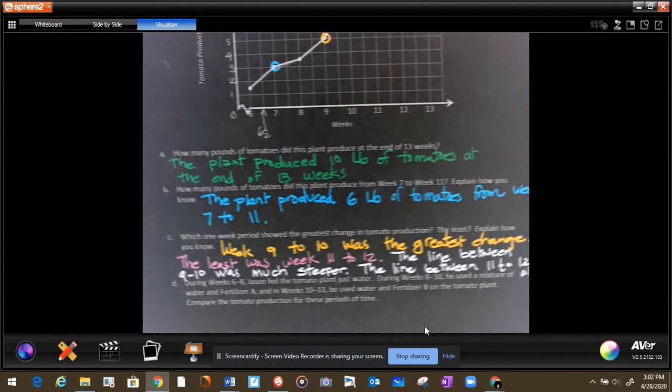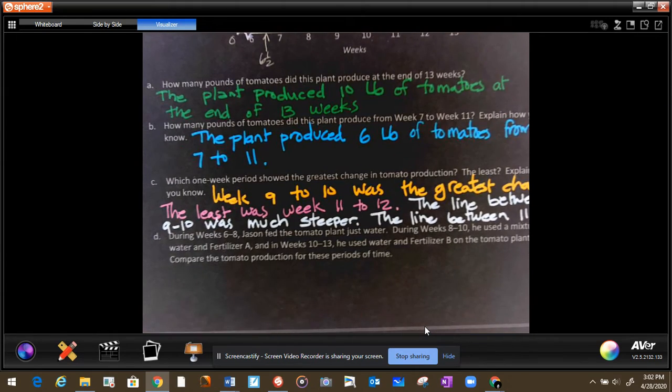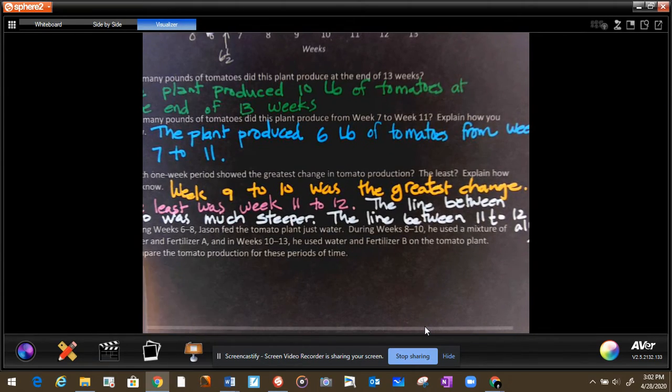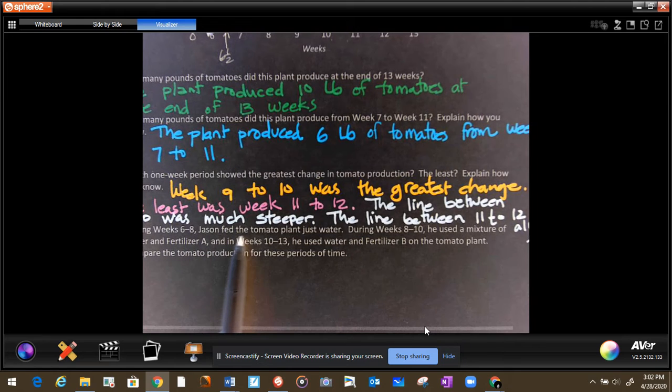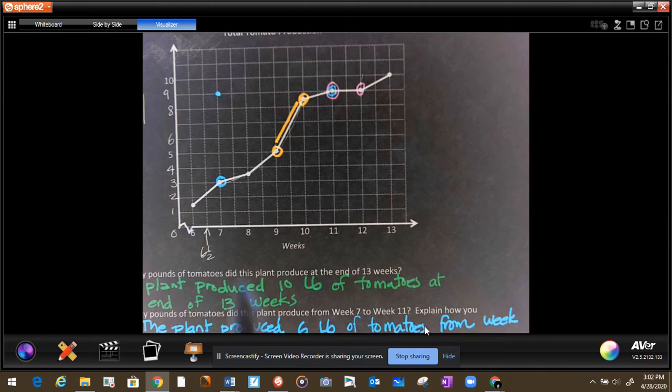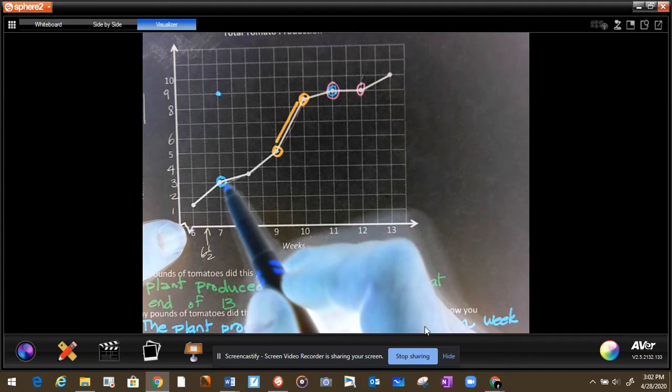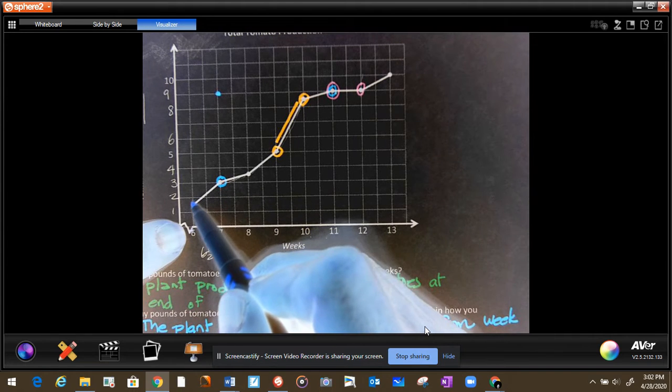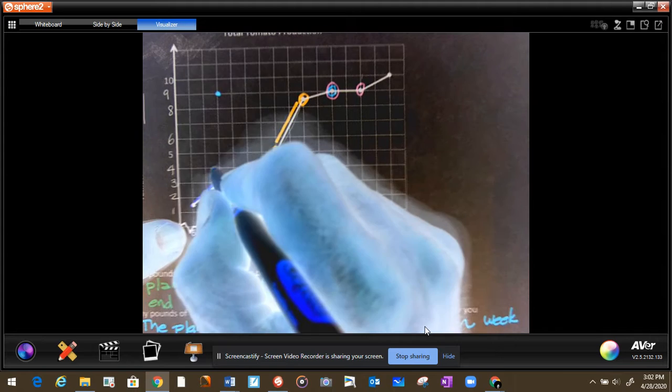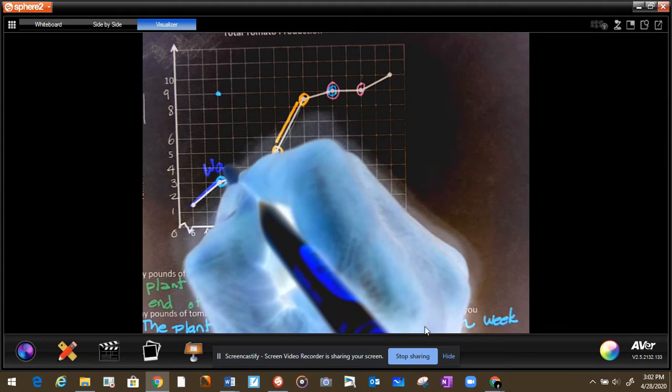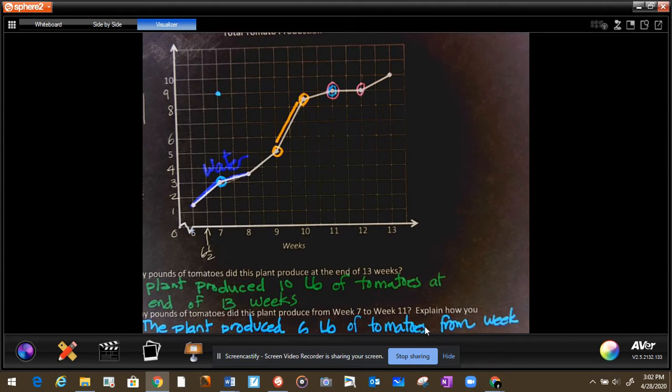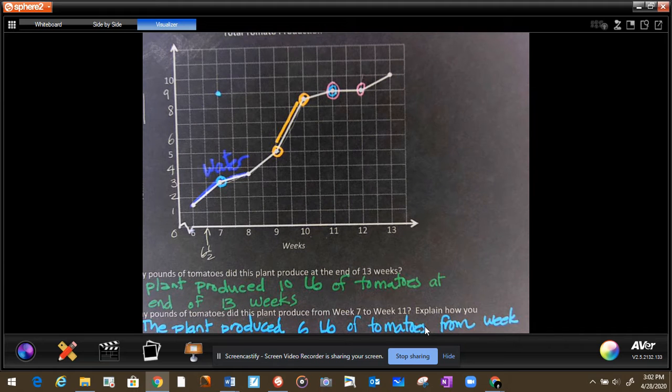Alright, let's look at the last but more complex question. During week 6 and 8, Jason fed the tomato plants with water. Let's make a couple of drawings. I want to show you how you would answer this question. So from 6 to 8, he only added water. So from 6 to 8, which is this right here, I'm going to color this yellow. He only watered the plants. That's the only thing he did.